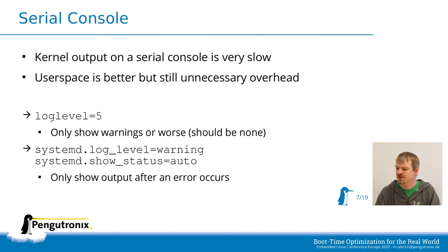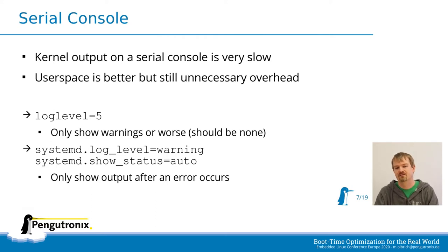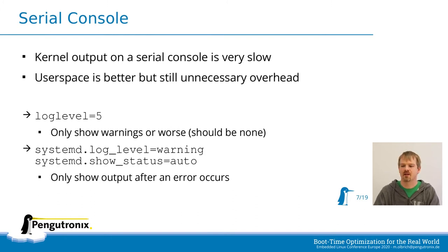Let's get to some real things. The serial console — this is where most people start with boot time optimization. Output on the serial console, especially from the kernel, is very slow and can easily add a few hundred milliseconds. But I'm not proposing 'quiet,' because quiet disables all errors as well. Instead, use loglevel=5, which means we only show warnings and worse. In a final product there should be no warnings, so we have no output until an error occurs. We can keep this during development because errors are still visible.